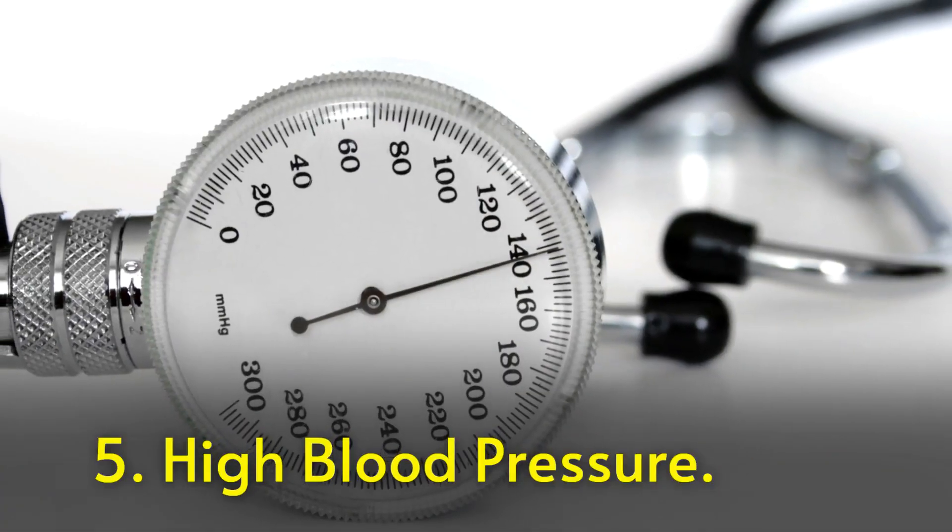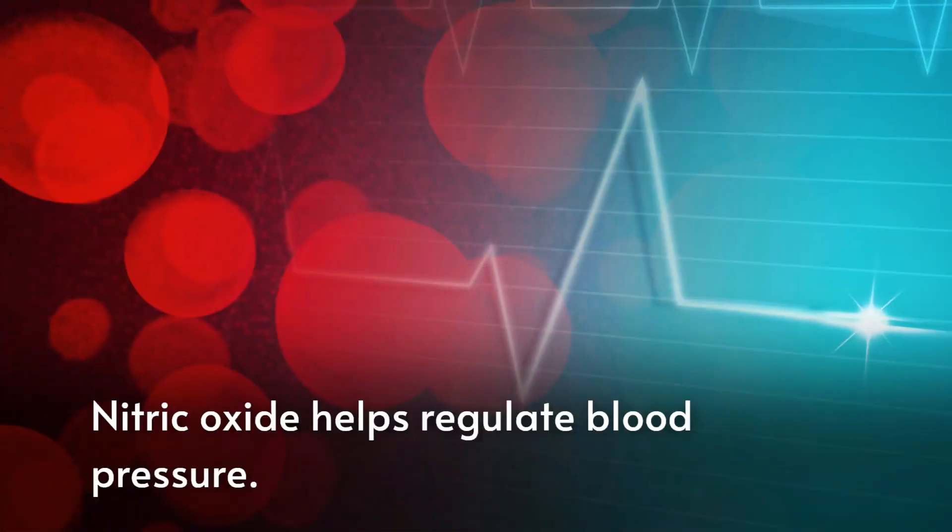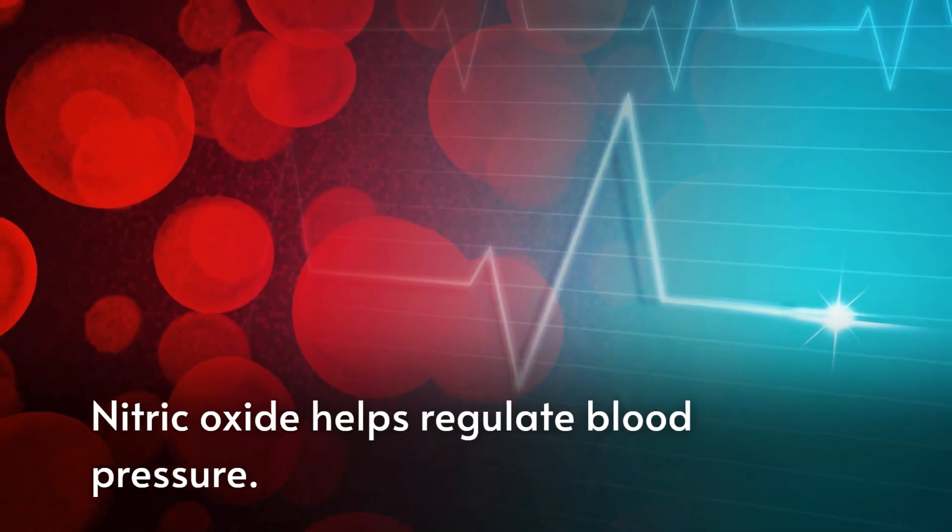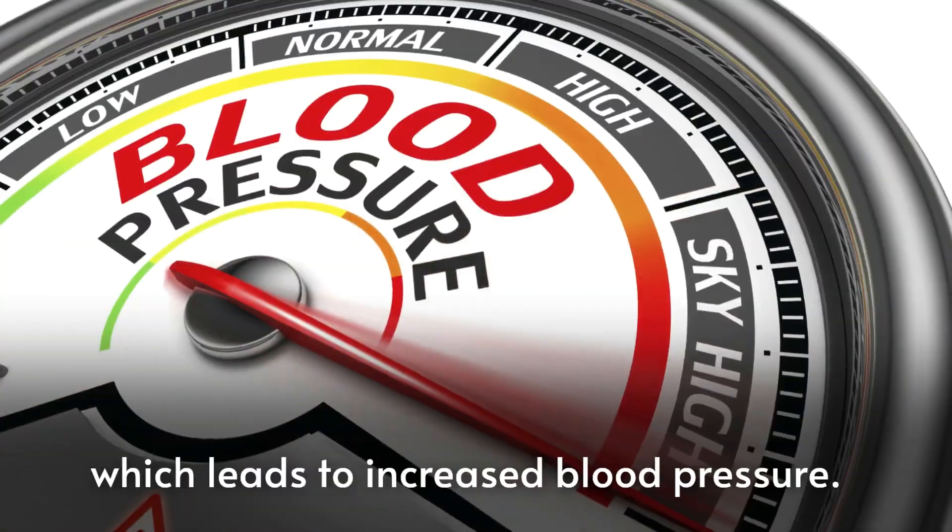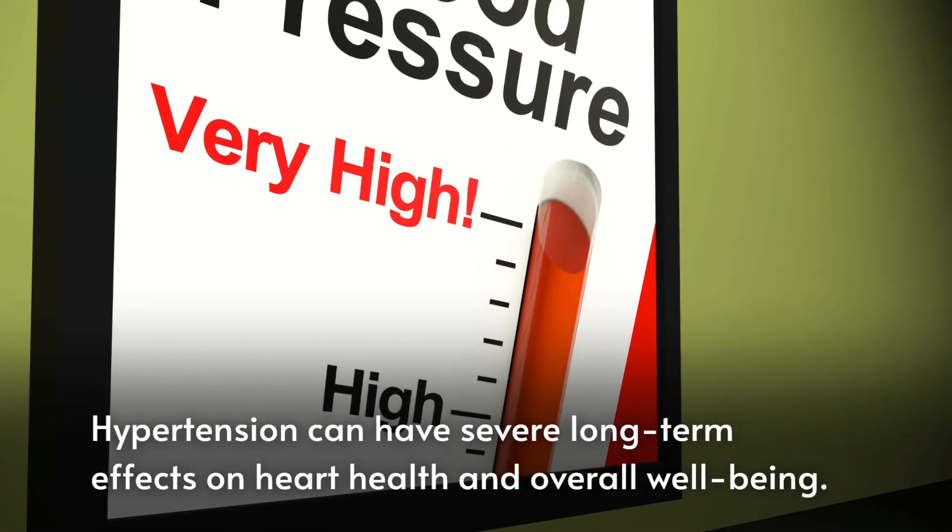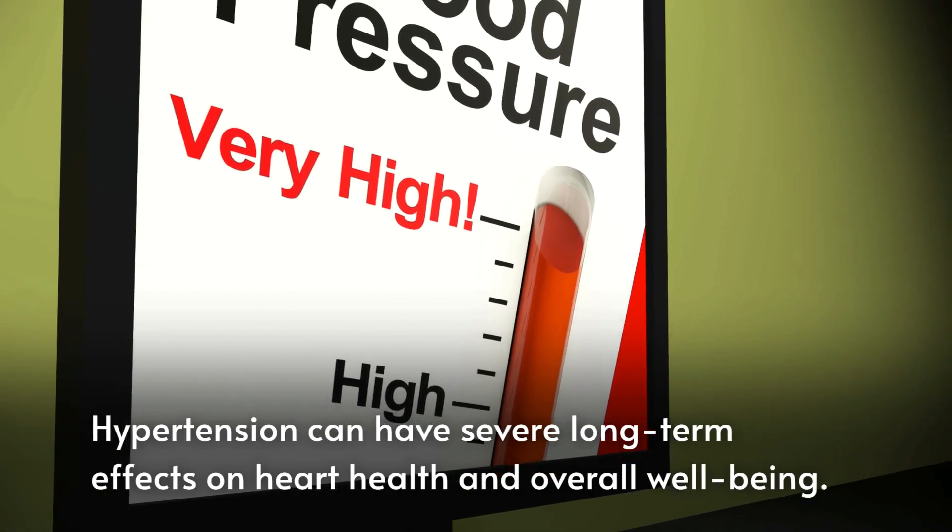Sign number five is high blood pressure. Nitric oxide helps regulate blood pressure. A deficiency of nitric oxide can cause blood vessels to constrict, which leads to increased blood pressure. Hypertension can have severe long-term effects on heart health and overall well-being.